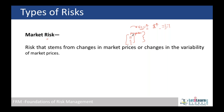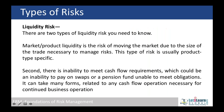Market risk is not related to a particular industry. If the risk is related to a particular industry, we call it business risk or unsystematic risk — as opposed to systematic risk, which affects the entire market.